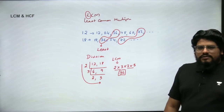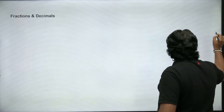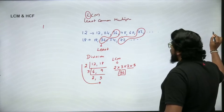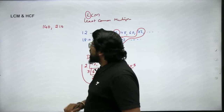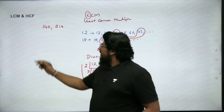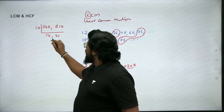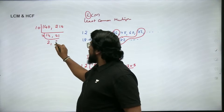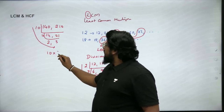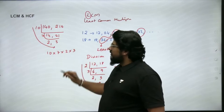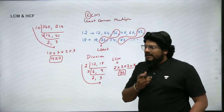Let's try the division method for a different set: 140 and 210. We know 10 is common, so dividing gives 14 and 21. Between 14 and 21, 7 is common, giving us 2 and 3. Since 2 and 3 share nothing, we stop. LCM = 10 × 7 × 2 × 3 = 420. So LCM of 140 and 210 is 420.